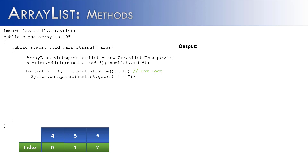The for loop is going to start at 0, and it's going to go 1 less than size. We wouldn't say i is less than or equal to the size — we would say i is less than the size, because the index is always going to be 1 less than what the size is. Inside of our for loop, we're going to use the print method, which uses numList.get(i), and the output would be 4, 5, and 6, with a space between each one.